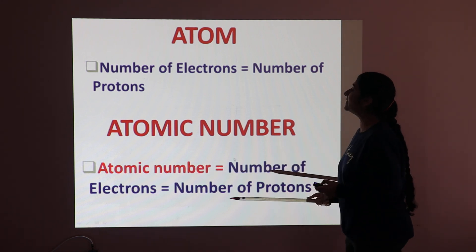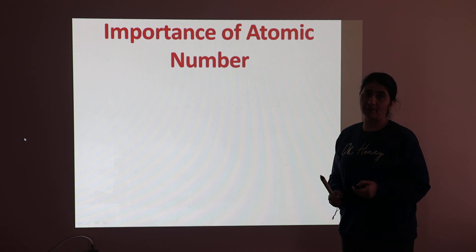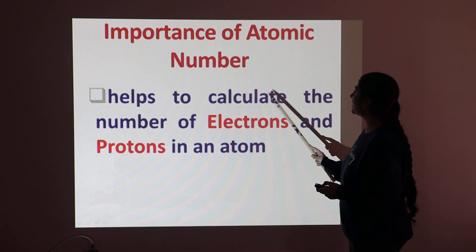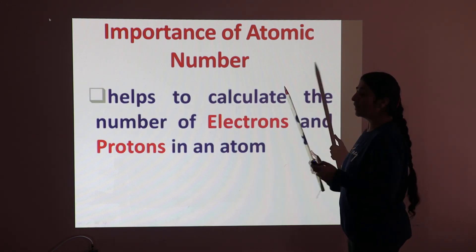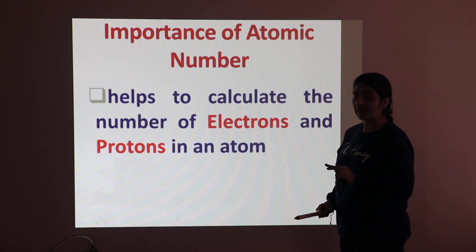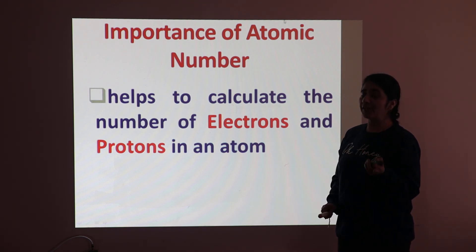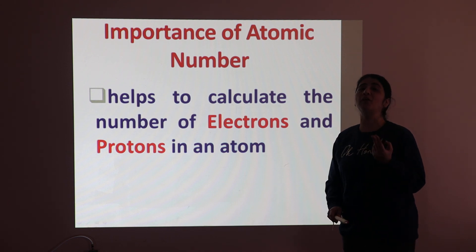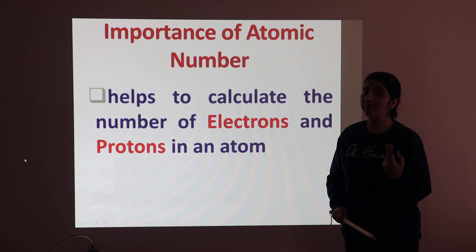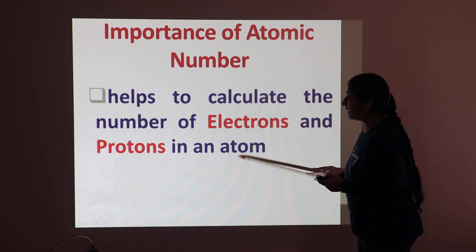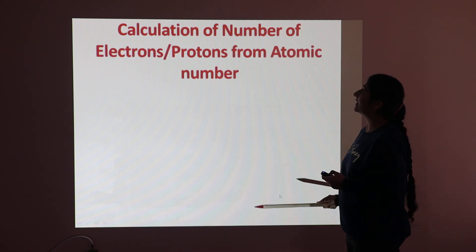So what is the importance of atomic number? The atomic number helps to calculate the number of electrons and protons in an atom. If you know the atomic number, you can easily calculate how many electrons and protons are present in a particular atom. I will explain this by taking examples.